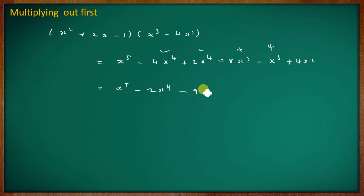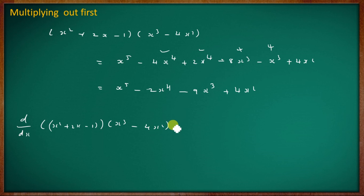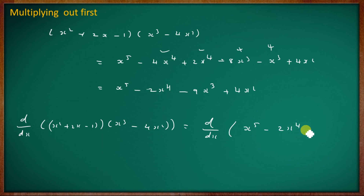Collecting like terms: x⁵ − 2x⁴ − 9x³ + 4x². Now we differentiate d/dx of (x⁵ − 2x⁴ − 9x³ + 4x²).